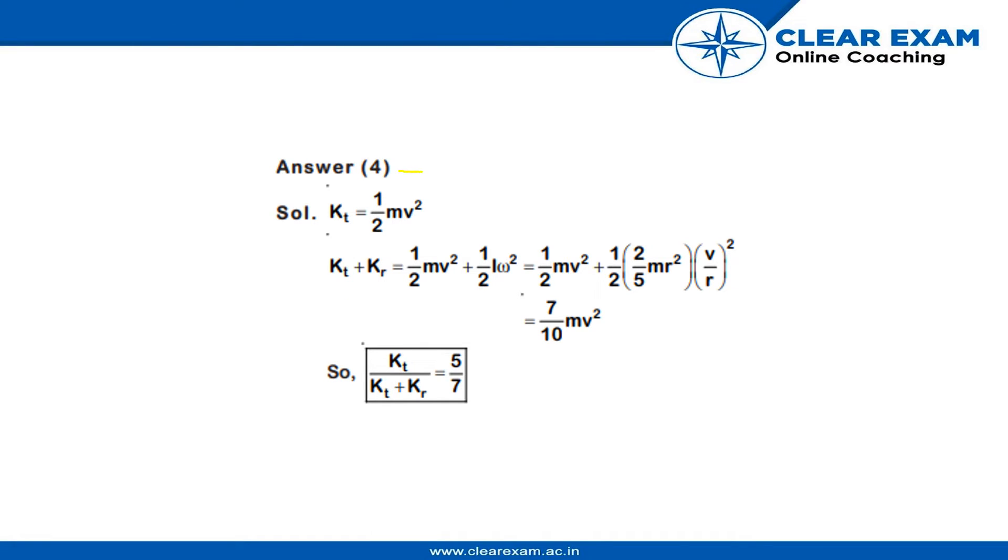The answer is fourth which is 5 to 7 ratio. Seeing the calculation, we have applied basic formula that KT equals half MV squared and whereas KT plus KR is half MV squared plus half I omega squared.